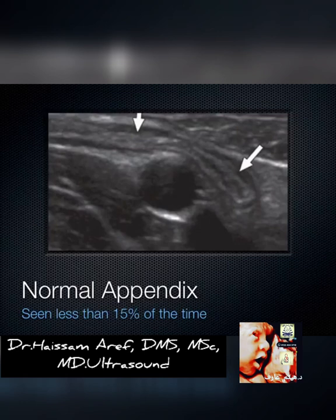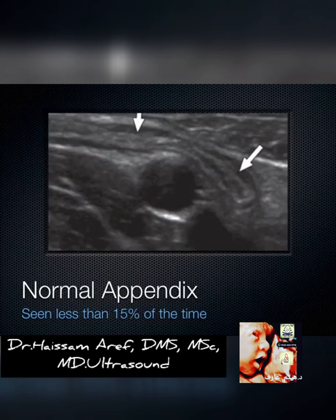The reason ultrasound has poor specificity for appendicitis is that the normal appendix is only seen about 15% of the time. Usually when you're looking for appendicitis you go in, start compressing in the right lower quadrant, see a bunch of loops of bowel, push around, and think you might see the appendix. What it looks like when normal is a blind-ended tubular structure hanging off the terminal ileum. You try to start around that area, mow the lawn down in the right lower quadrant in transverse and sagittal views, trying to find that structure — burn that image in your mind.